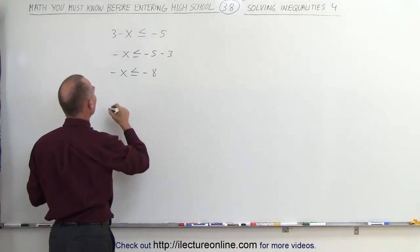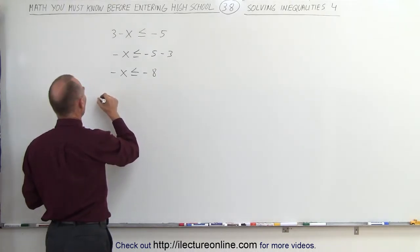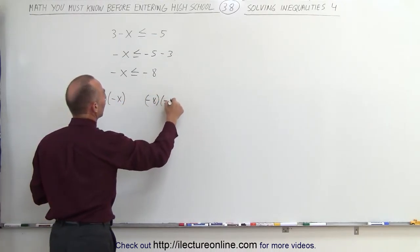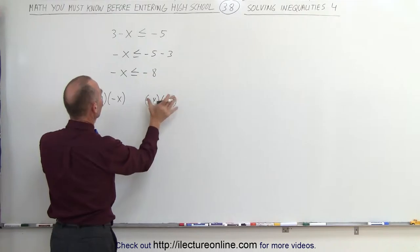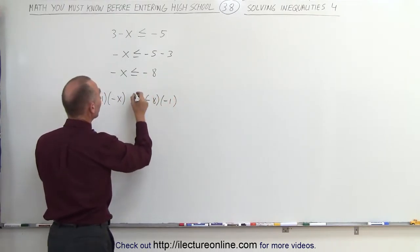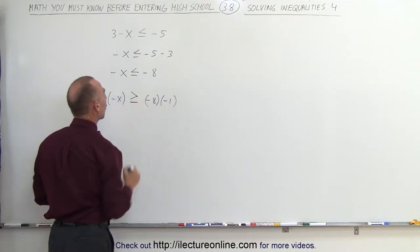So what we're going to do then is multiply both sides by negative 1, so negative 1 times negative x and negative 8 times negative 1. So we multiply both sides of the inequality by negative 1. But when we do that, we must flip the inequality symbol, so now it becomes greater than or equal to.